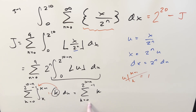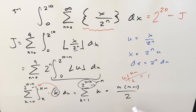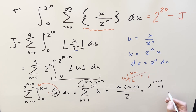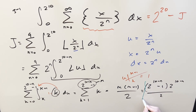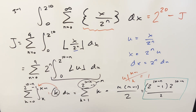Since the k=0 term contributes nothing, we can start at 1. Now we have the sum of the first m natural numbers, where m = 2^(10−n) − 1. Using the triangular number formula, that's m(m+1)/2, which becomes (2^(10−n) − 1) times 2^(10−n) all over 2.